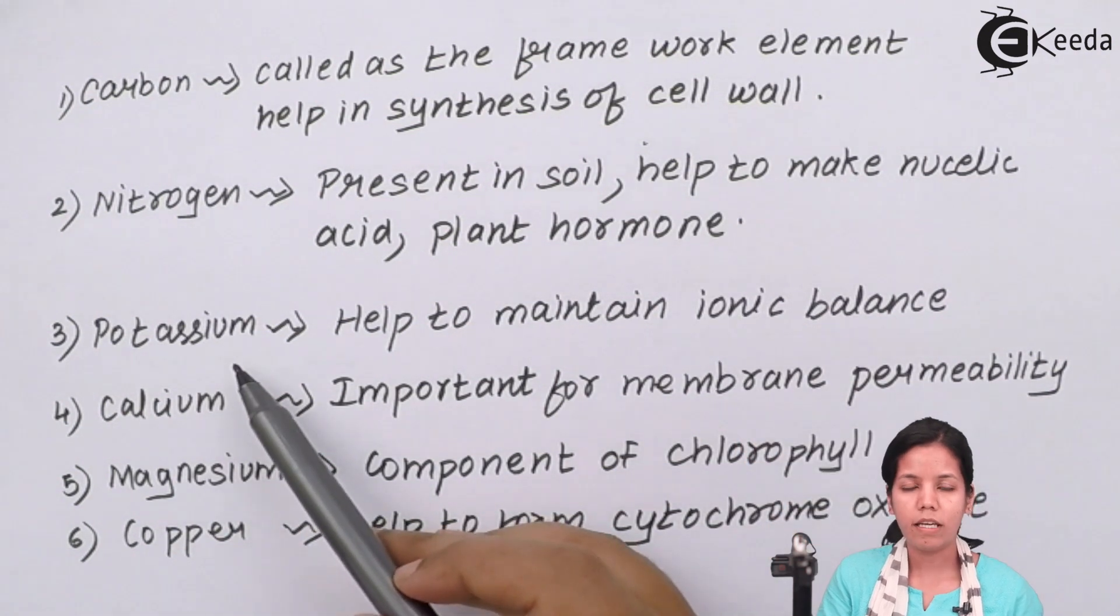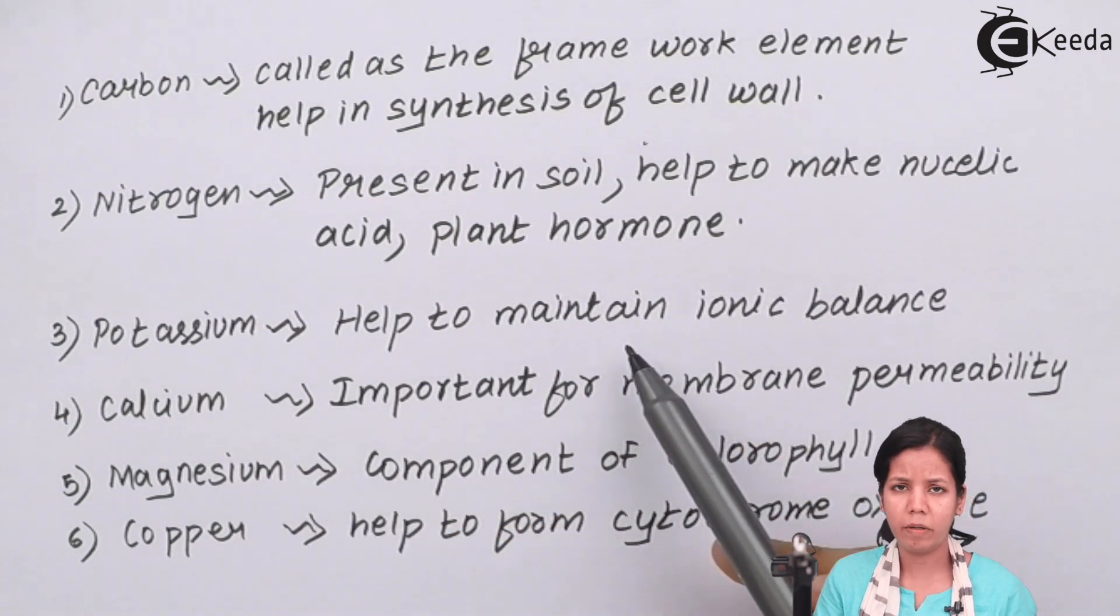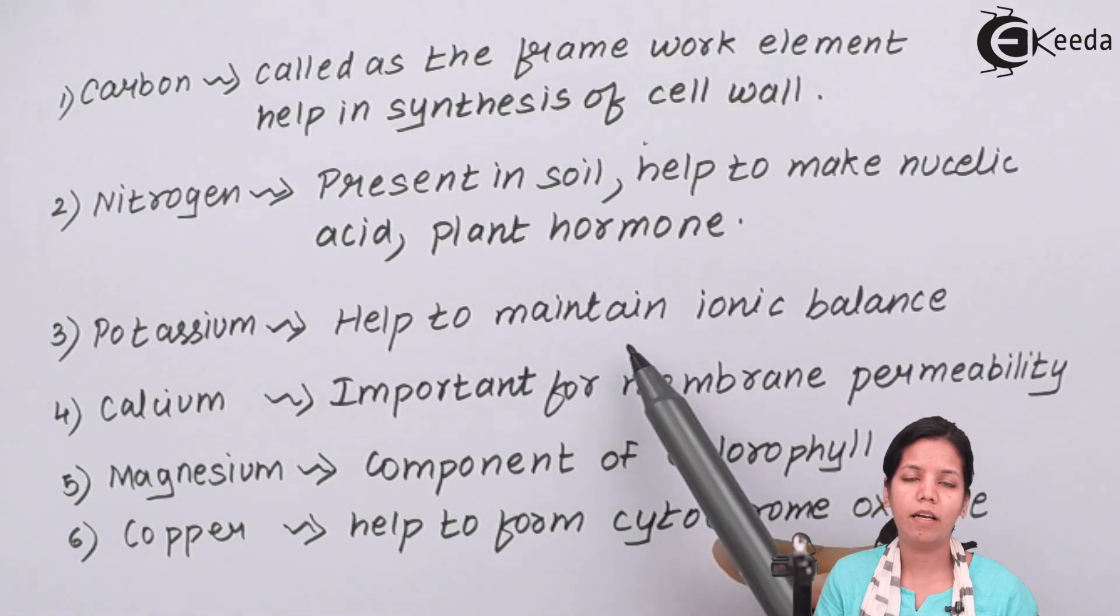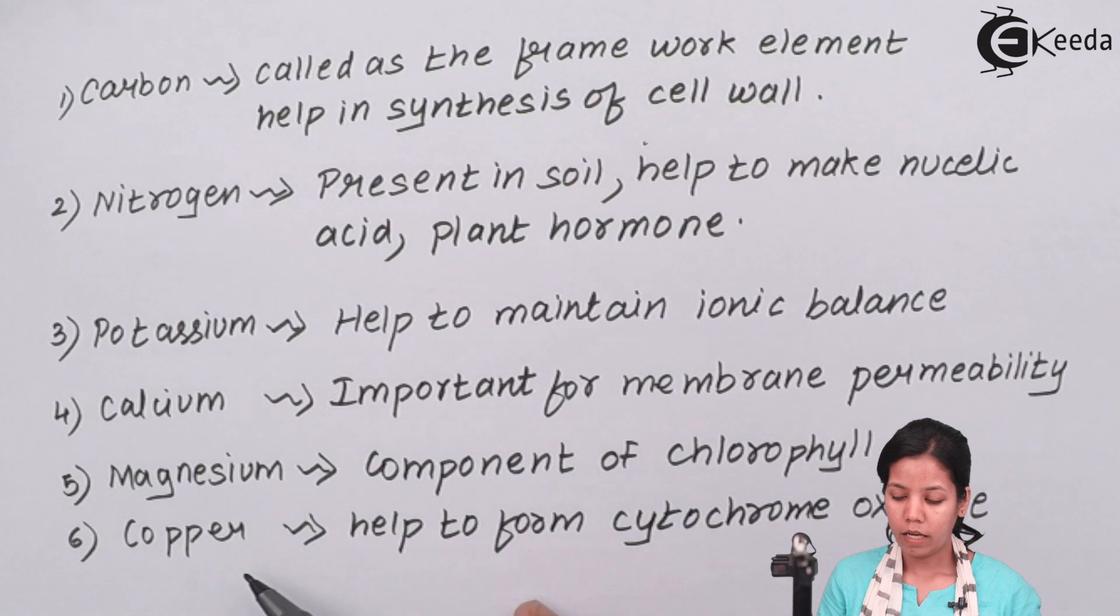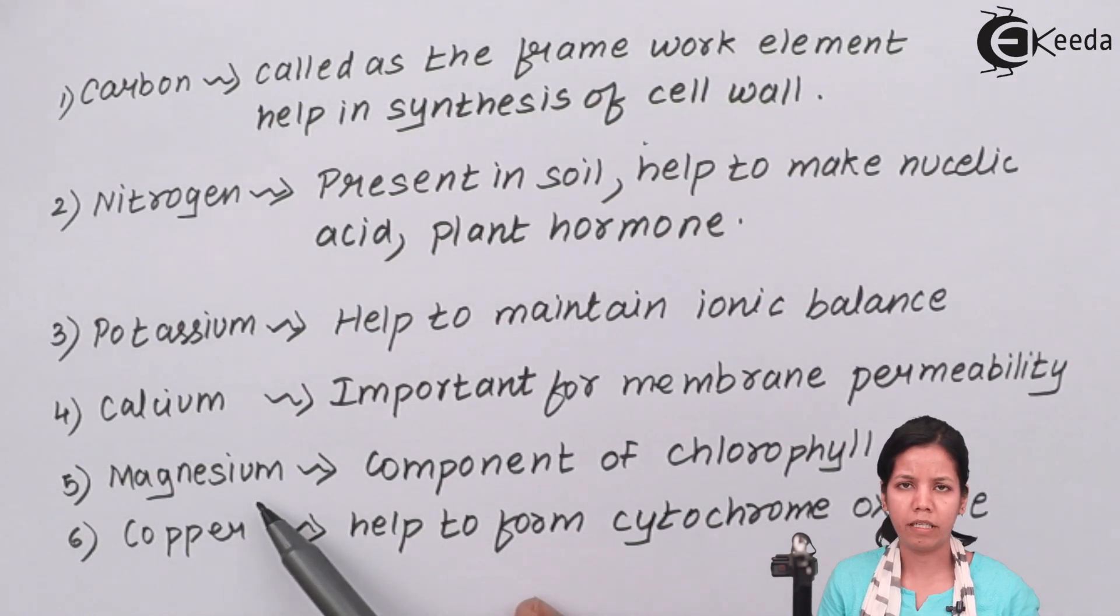Potassium or K+ helps to maintain ionic balance inside a plant cell. Calcium is important component of chlorophyll which is used for the process of photosynthesis. Magnesium and calcium together help in membrane permeability sometimes.